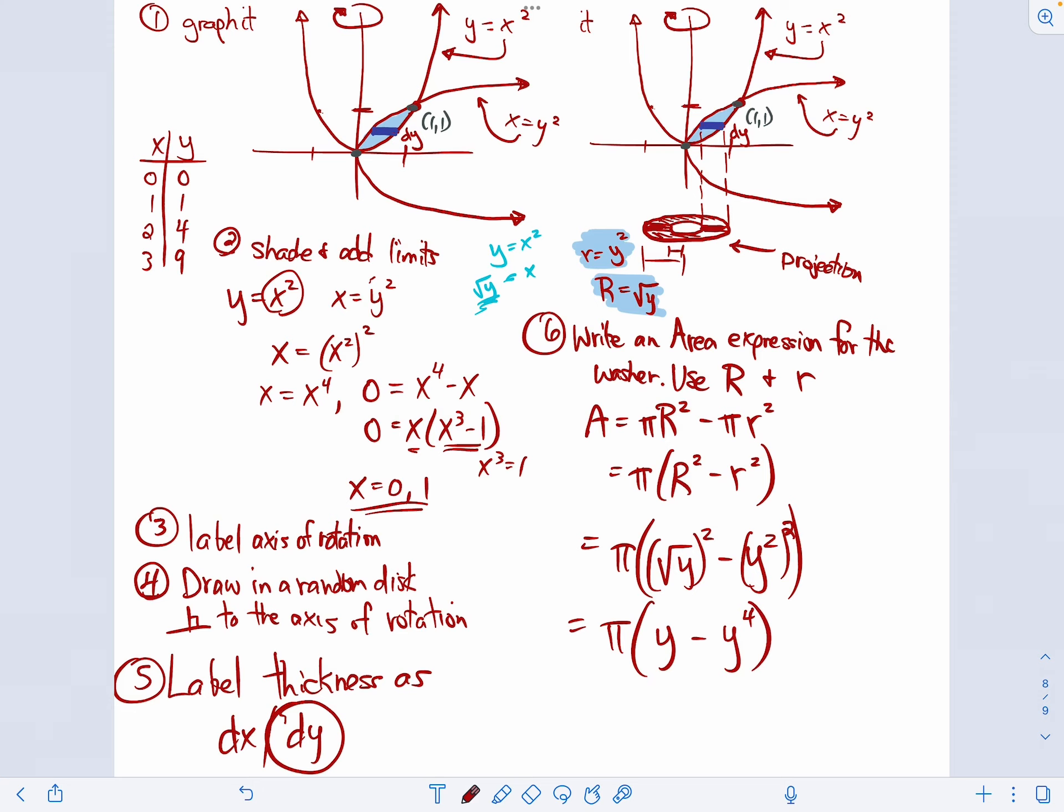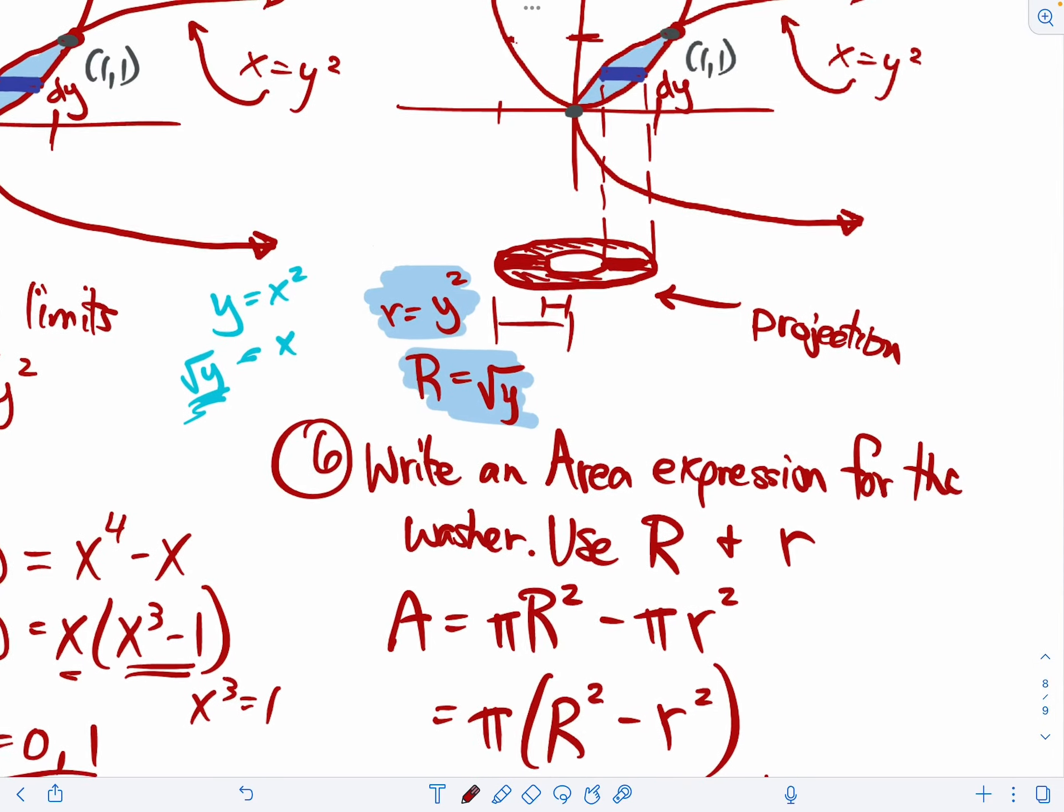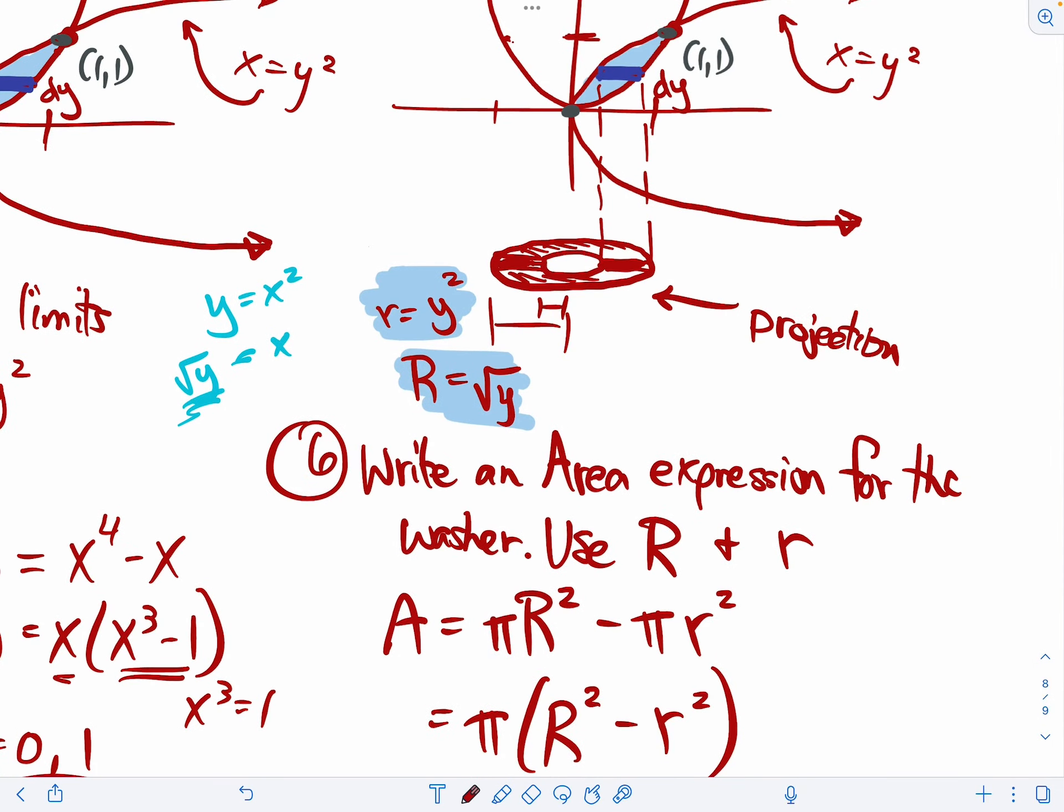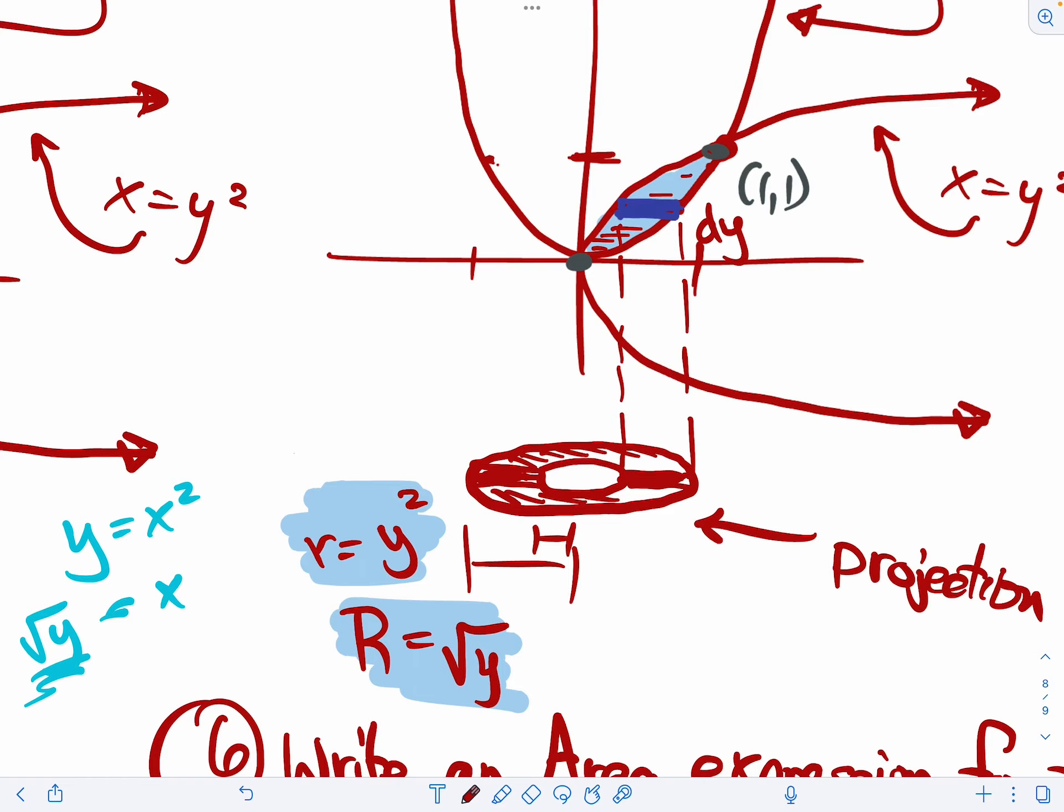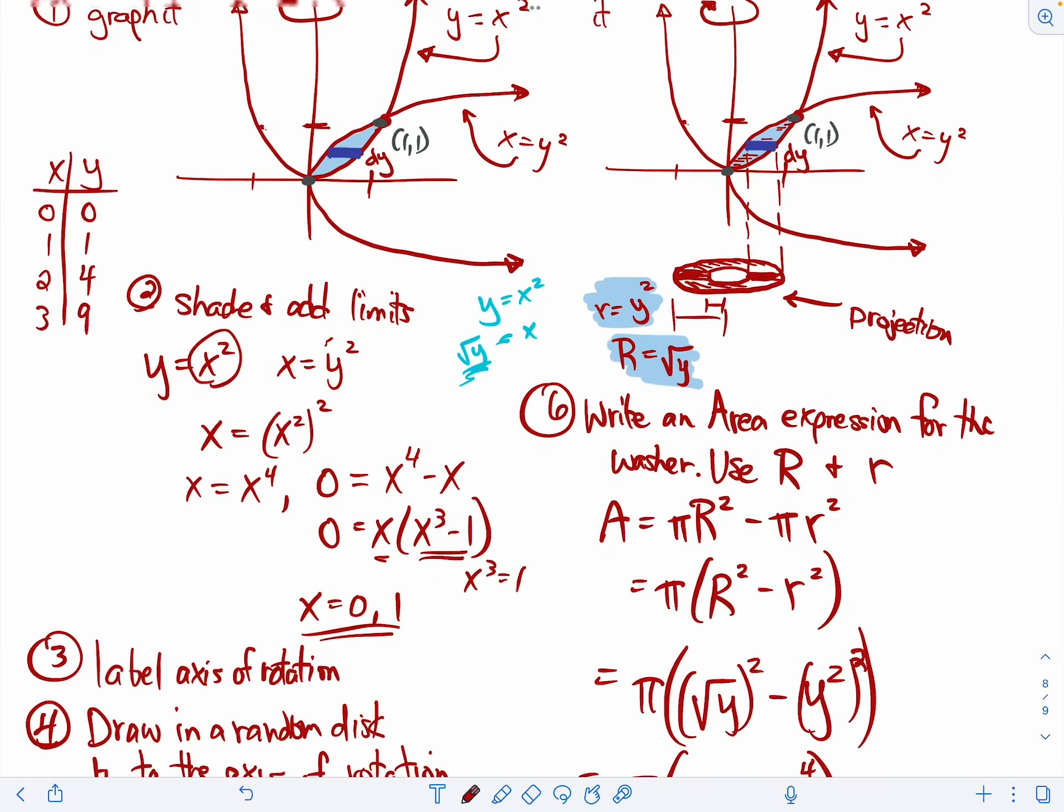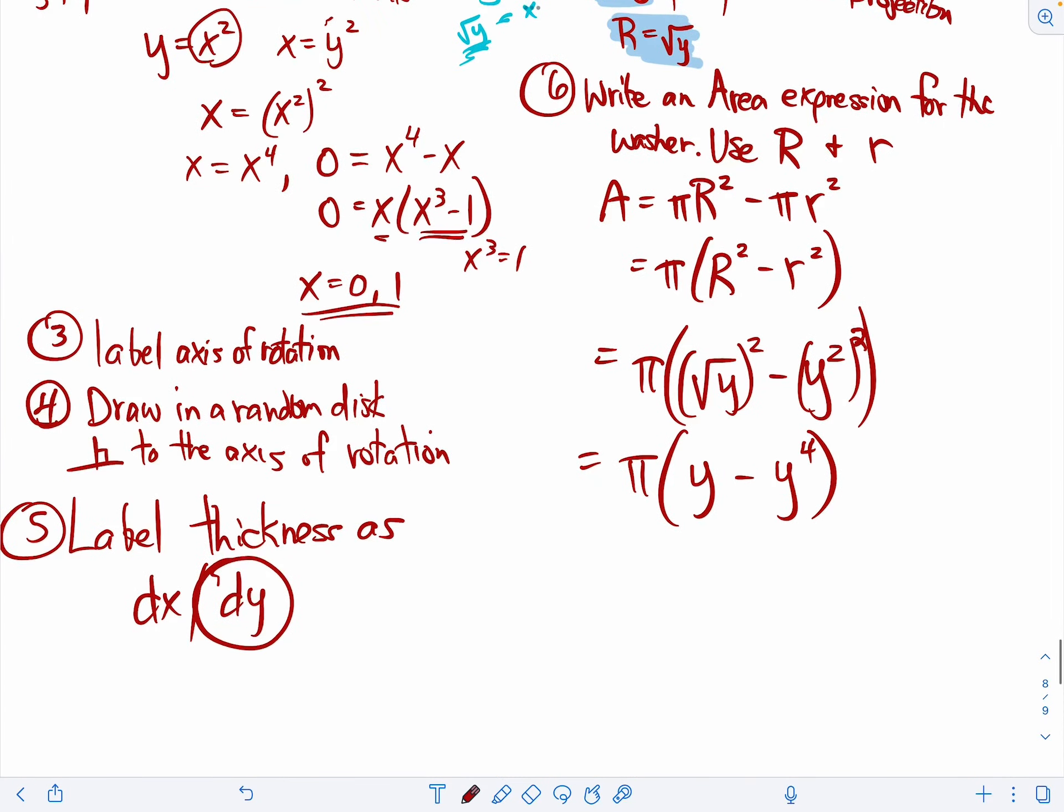Okay, we've kind of exhausted the area piece of this washer. And the washer is going to change because we're going to stack up a lot of those all the way up from zero to one. So now we can make an expression that says the change in our volume is going to be pi times y minus y to the fourth. That's our area. And then dy. dy is our thickness that makes into a volume. And that is just kind of general. That's a change in volume.